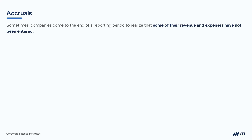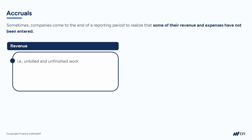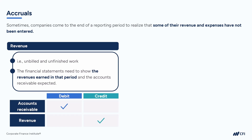The final type of adjusting entry I'd like to talk you through is something called accruals. Sometimes companies reach the end of their reporting period and realize they just haven't had a chance to record all their transactions. For example, a company may be so busy with work that they've done the work but haven't had time to prepare and send out the invoices before the end of the year. So even though the invoices haven't been sent out, we still need to reflect that in the current accounting year we earned revenue. We record revenue on the income statement — we credit revenue — but we also debit accounts receivable, recognizing that we have customers that owe us money for the work we've done, even though we haven't invoiced them yet.